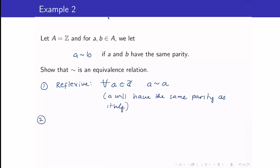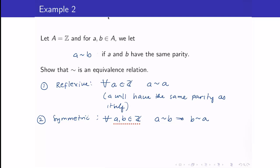Next, let's check for the symmetric property. For the symmetric property, we are getting two elements. We are checking: if A is related to B, then B must be related to A. Yes, this is true — if A has the same parity as B, then B has the same parity as A.